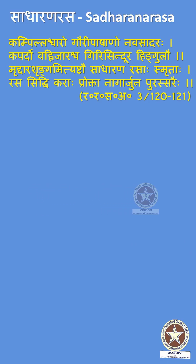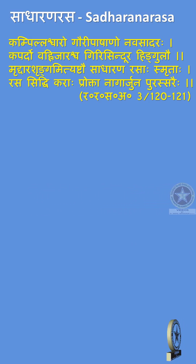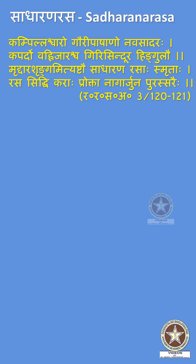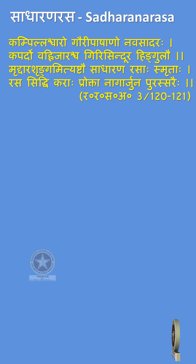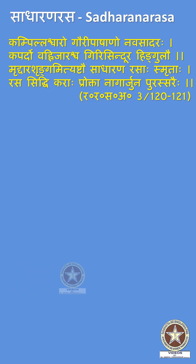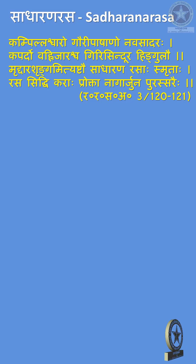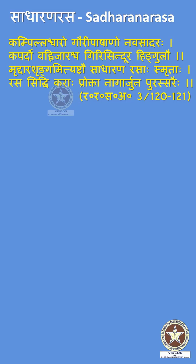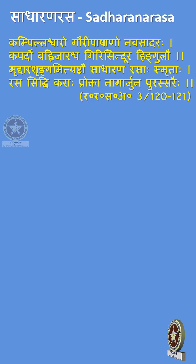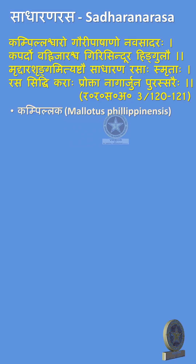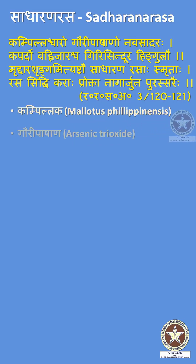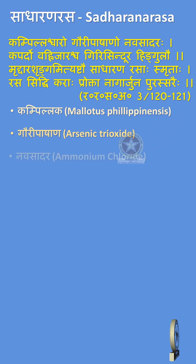The next category is Sathana Rasah. Reference: Rasaratna Samuchaya Chapter 3 Shloka 120 to 121. There are 8 drugs which come under Sathana Rasah, explained by Acharya Nagarjuna. They are Kampillaka (Melotus Philippinensis), Gauri Pashana (Arsenic Trioxide), and Navasadara (Ammonium Chloride).